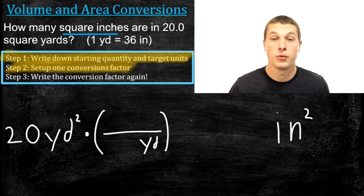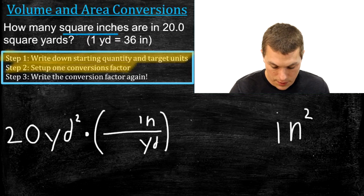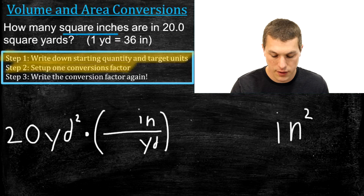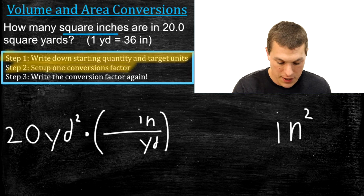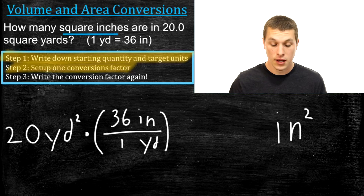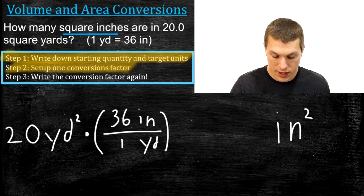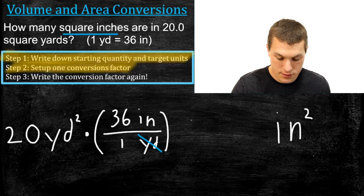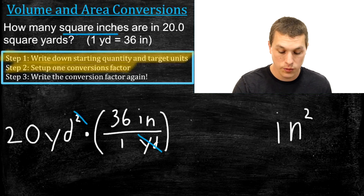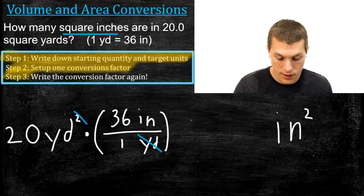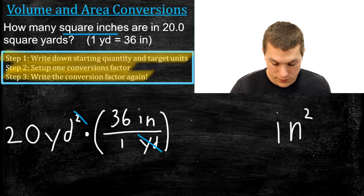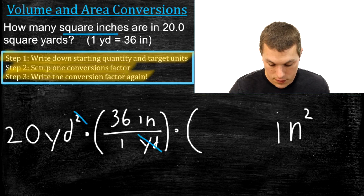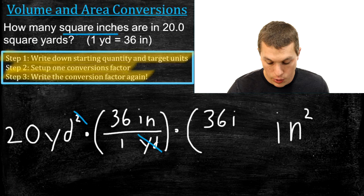We fill in from our equality: one yard equals 36 inches, so 36 goes next to the inches and 1 goes next to the yards. Notice that if we just apply this one conversion factor, we get rid of yards once but we're still left with a yard. So we have to apply the conversion factor twice. Step three tells us to write that conversion factor again — for area, we write it twice to get rid of both yards.